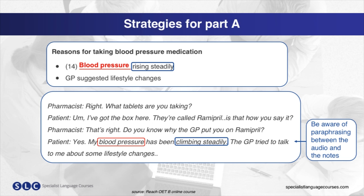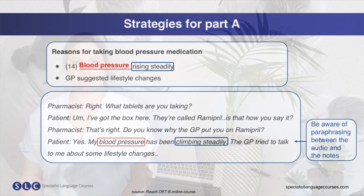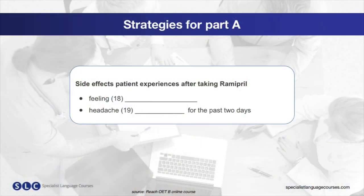You will always need to write exactly what the patient says. Let's take a look at some more examples from a later section in the conversation. We can predict that for number 18, the answer needs to be an adjective describing a symptom, and for number 19, we can predict that the answer will be a noun phrase.